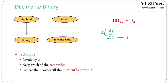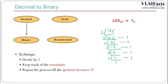Continuing the division: 62 divided by 2 gives quotient 31, remainder 0. Then 31 gives 15 remainder 1; 15 gives 7 remainder 1; 7 gives 3 remainder 1; 3 gives 1 remainder 1. Finally, 1 divided by 2 gives quotient 0 and remainder 1.